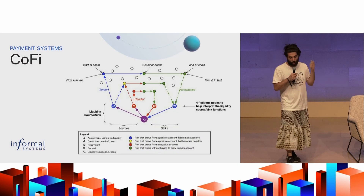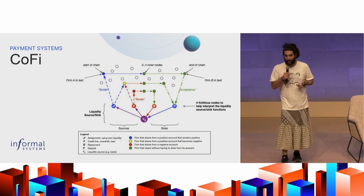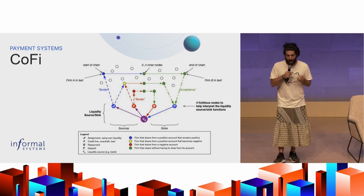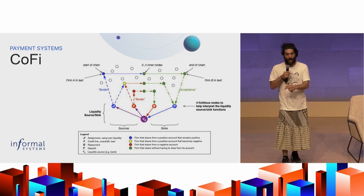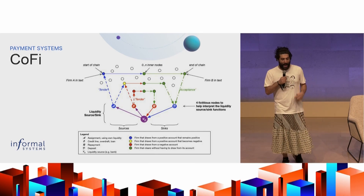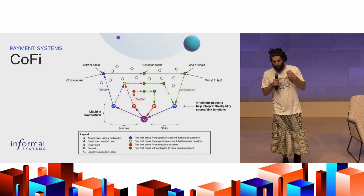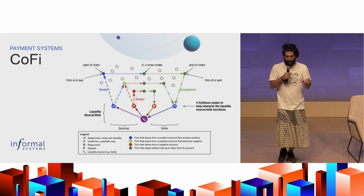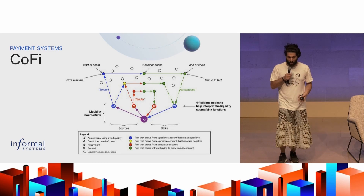Here's what it ultimately looks like. We have our graph with a bunch of obligations. At the bottom, VB is our liquidity source — it could be Osmo, Tia, Atom, whatever you like. On the left, A is the assignment source and O is the overdraft source — positive and negative balances that people are able to draw on. On the right, we have repayment and deposit, where the money goes back after it's used. We use the same algorithm to find cycles, and with the addition of liquidity into the network — even a little bit — a small amount of tenders or acceptances allows us to close more loops, so more people can benefit from their debt being discharged.